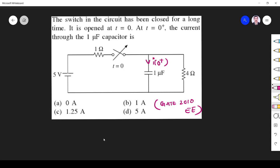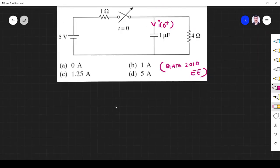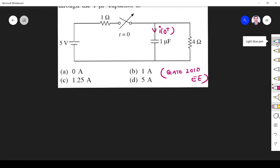What they are telling is the switch has been closed for a long time, it is opened at t = 0. So at t = 0-, switch is closed. It is closed for a long time so it reaches steady state. We know at steady state capacitor is open circuit.